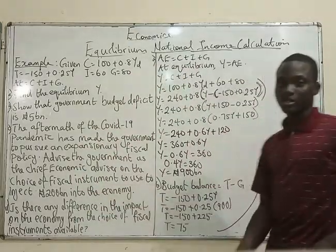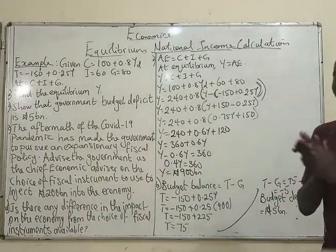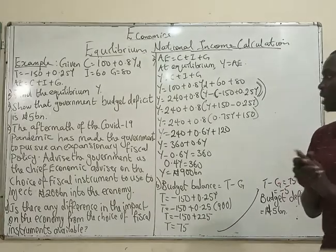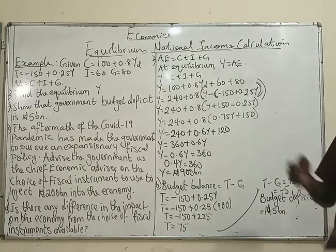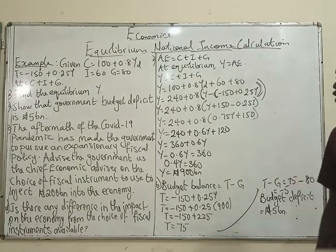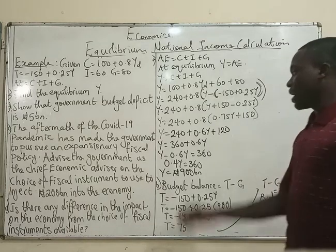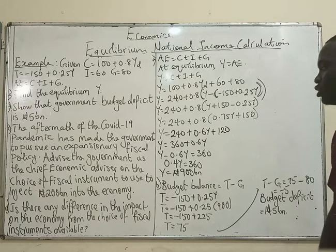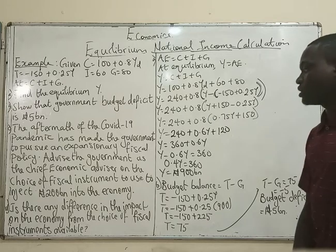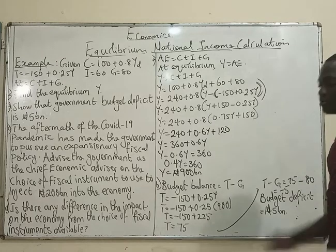Now the third question — a very interesting one. The aftermath of the COVID-19 pandemic has made the government pursue an expansionary fiscal policy. Advise the government as the chief economic advisor on the choice of fiscal instruments to inject 200 billion into the economy.